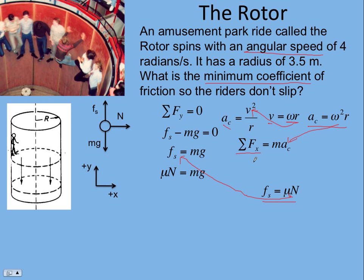The sum of the forces in the x direction—there's only one, just the normal force in the positive x. So the x equation becomes N = mω²r.